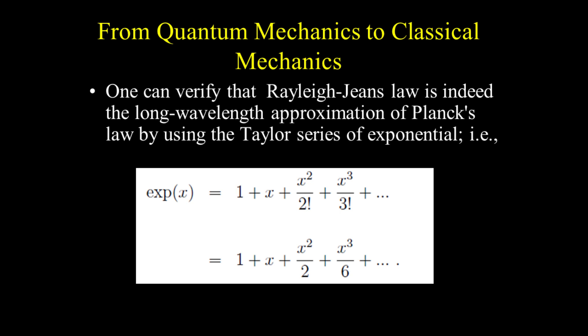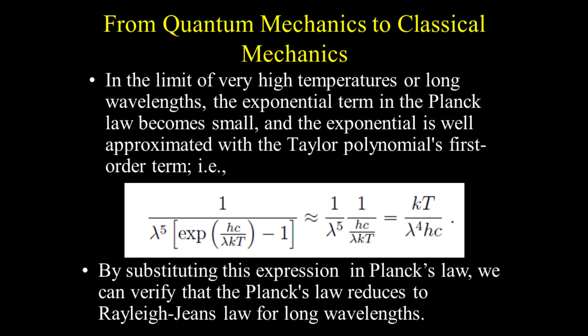One can verify that Rayleigh-Jean's law is indeed the long wavelength approximation of Planck's law by using the Taylor series of the exponential. In the limit of very high temperatures or long wavelengths, the exponential term in Planck's law becomes small and is well approximated by the Taylor polynomial's first-order term. By substituting this expression into Planck's law, we can verify that Planck's law reduces to Rayleigh-Jean's law for long wavelengths.